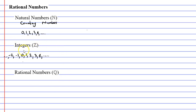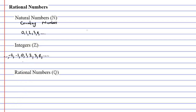The integers include the set of natural numbers, such as zero, one, two, three, and so on. But they also include negative numbers, such as negative one, negative two, and so on. The symbol we use for integers is the letter Z, once again with the double stroke.